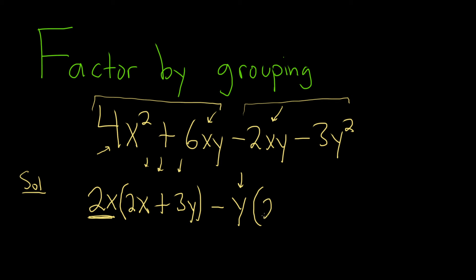Well, we're just missing the 2x, so 2x. Same thing here. What do we multiply by negative y in order to get negative 3y squared?